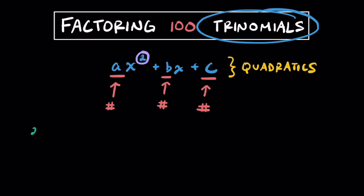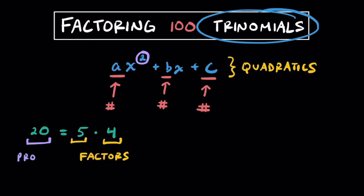Now to understand what it really means to factor, let's look at the number 20 and think of two factors that multiply to get 20. Two factors I can think of are maybe 5 times 4. So this 5 and this 4 are both going to be factors — two factors that multiply to get 20. When you multiply these two factors together, you get a product, so 20 is going to represent our product.